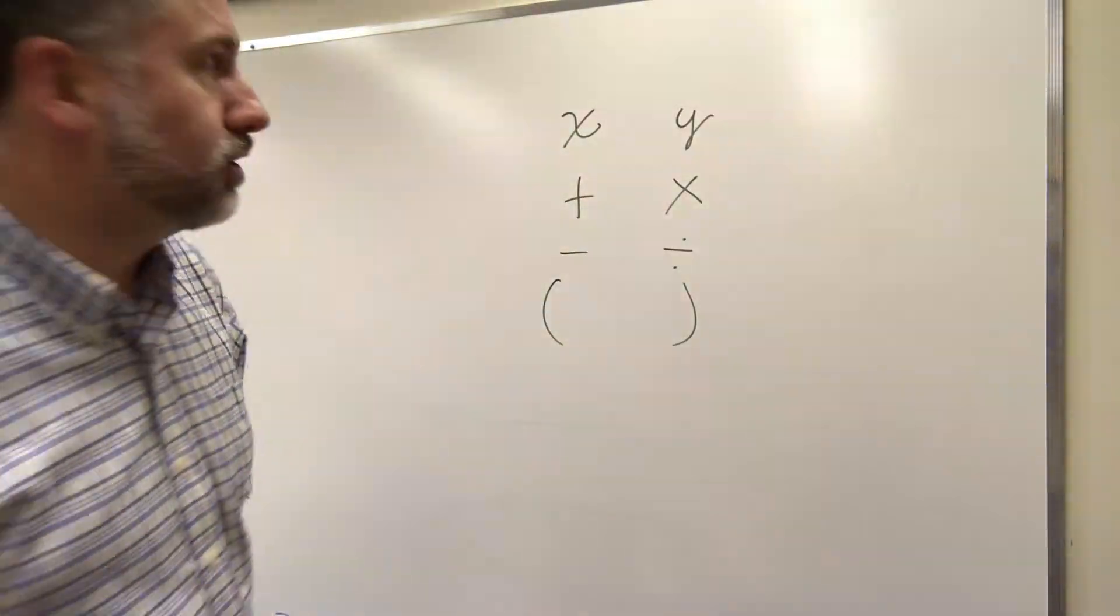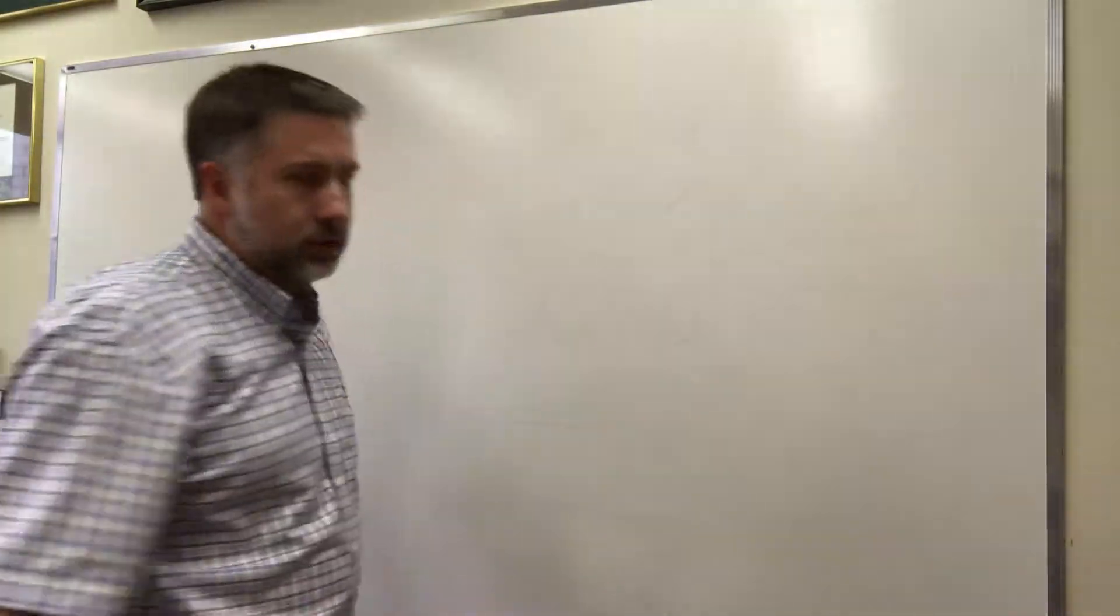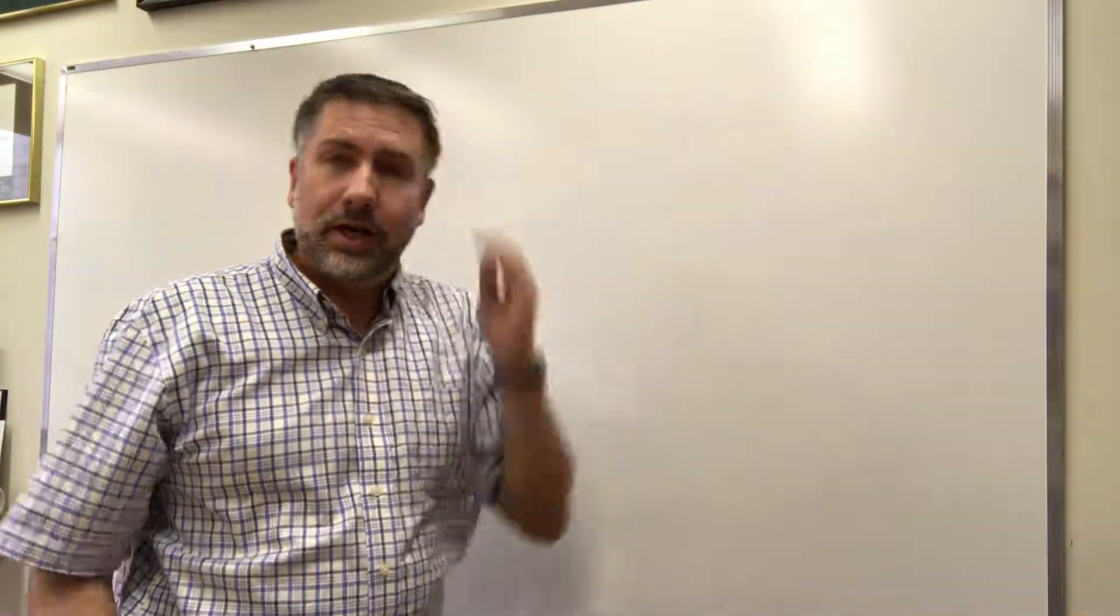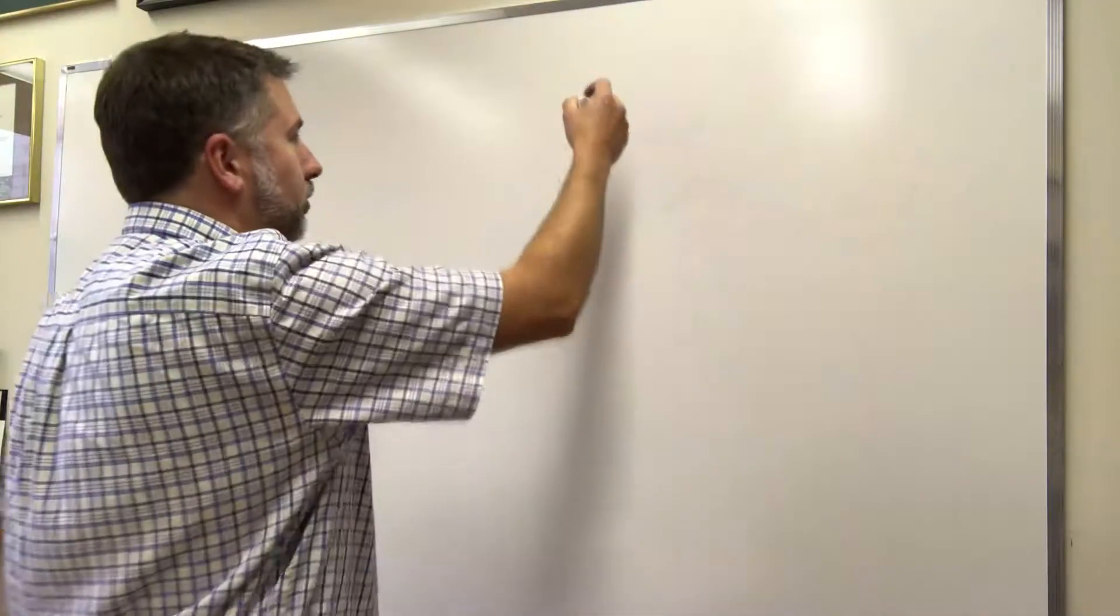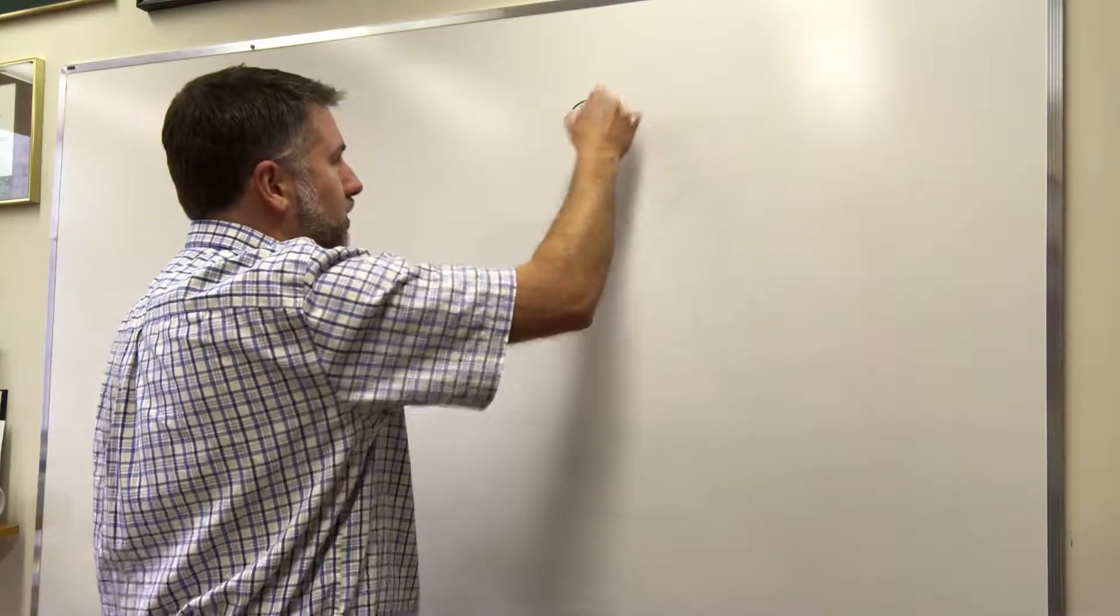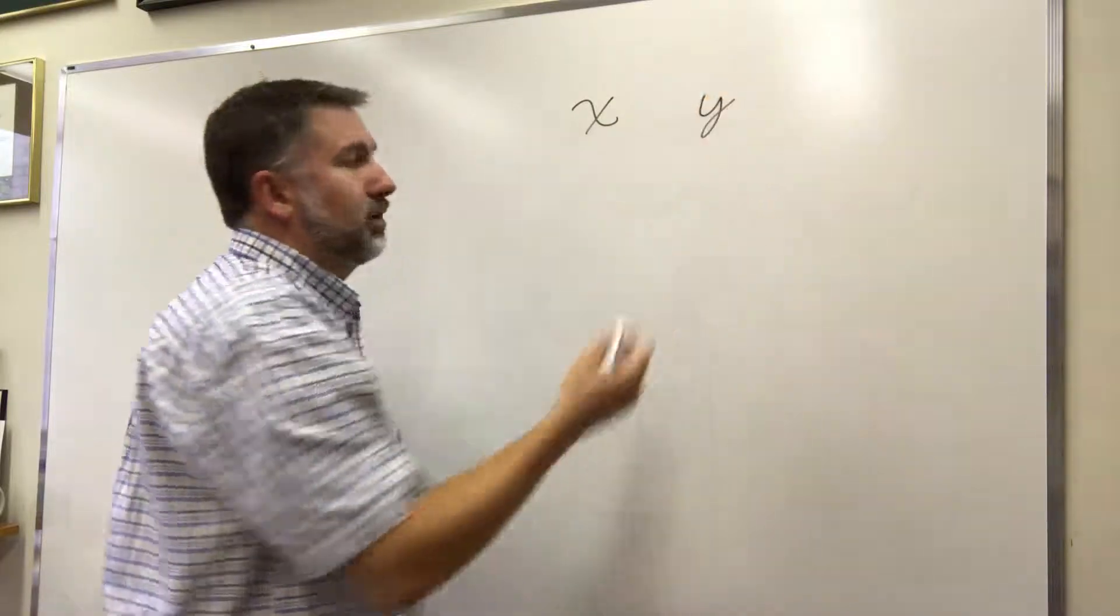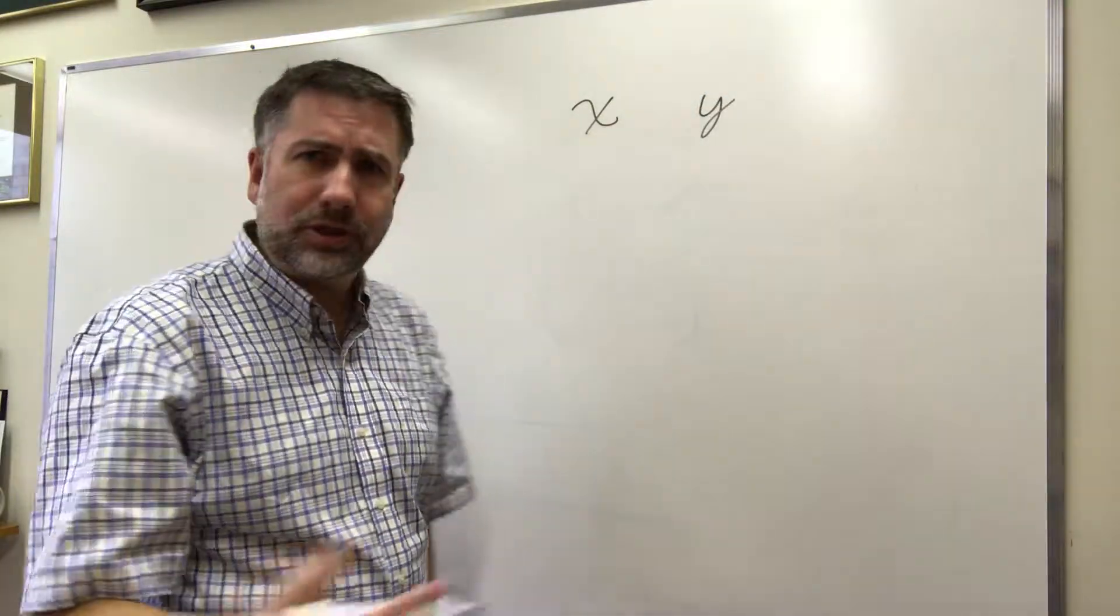Now in Boolean algebra, all of these things are still true, but there are some differences because we only have two possible values. We have variables like x and y, we have operations, but the operations are a little bit different.